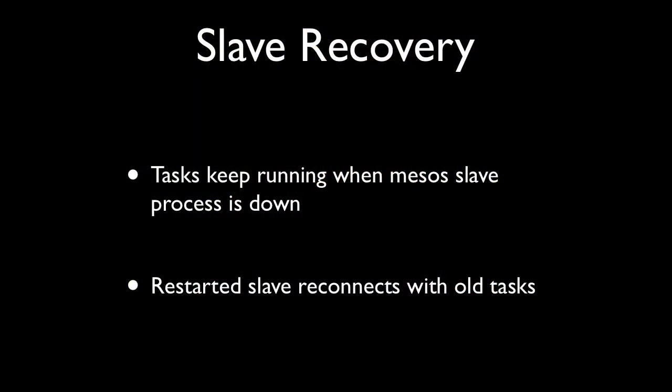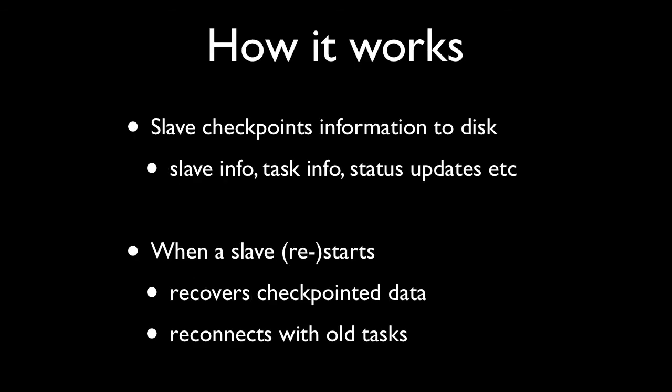So the way this feature works is that when the Mesos slave is down, all the processes — since they're fork-exec'd — still keep running even though they don't have a slave to talk to. We changed the driver side and the executor to cache things until the slave comes back up. The slave checkpoints data about the tasks and executors on the local disk, and when it restarts it reads the data from the checkpointed log and then reconnects to all the tasks that are running.